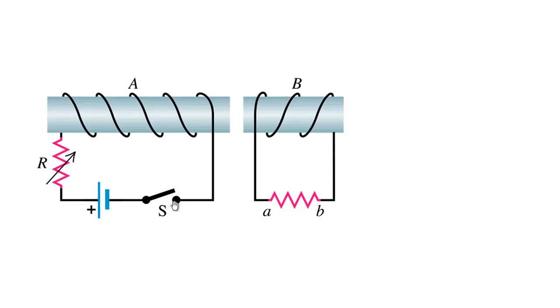If the switch remains closed, that magnetic field will remain through B and there will be no change in flux, therefore no current in solenoid B.